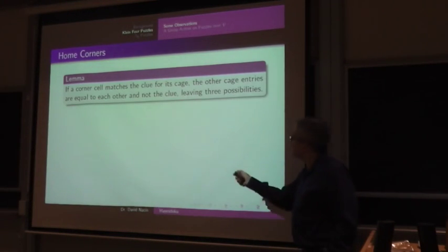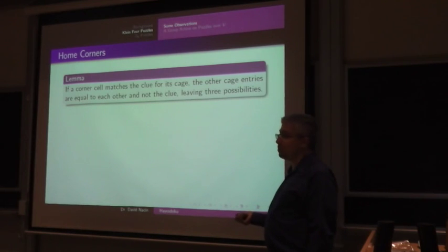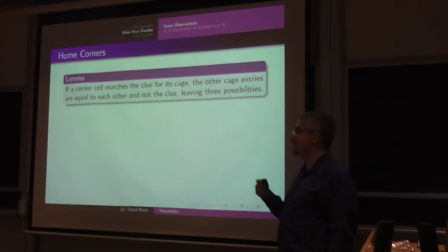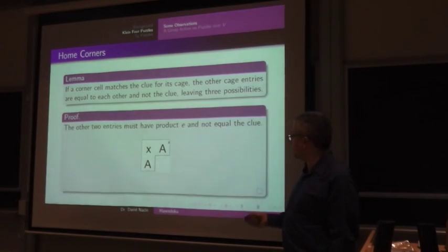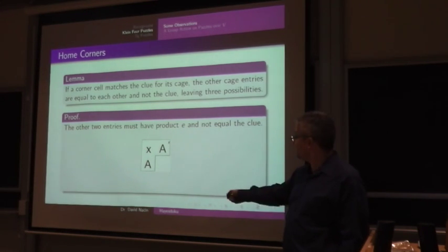Another thing is I'm going to just define home corners and away corners. A home corner is just going to be a corner entry equal to the clue in a corner of the puzzle. And an away corner is going to be one that's not equal to the clue. Now, it turns out that if a corner cell matches the clue for its cage, the other cage entries are equal to each other and not the clue. And that gives us three possibilities. And here's why. Well, if I put the clue in the corner, I know that these two have to give me the identity, so they have to be the same and I'm done. And they also can't be equal to the clue. That's why there's three possibilities, not four. And that's because of the last square condition.